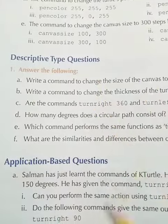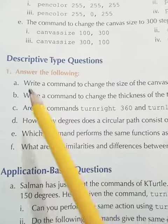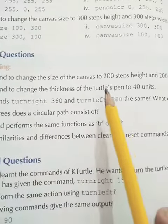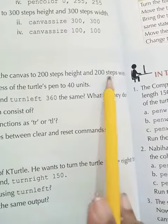Write today's date and day over here. Descriptive type questions number one answer the following part a. Write a command to change the size of the canvas to 200 steps height and 200 steps width.